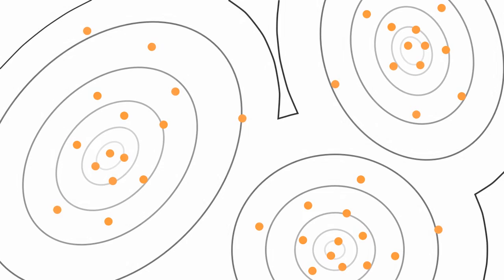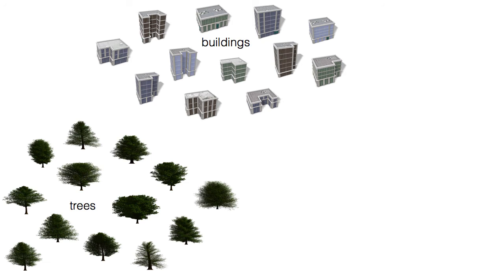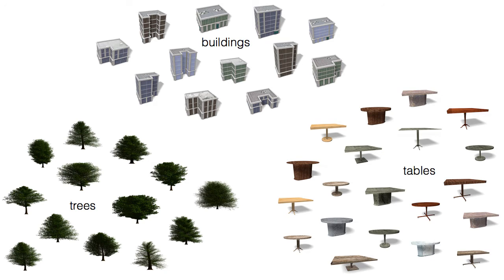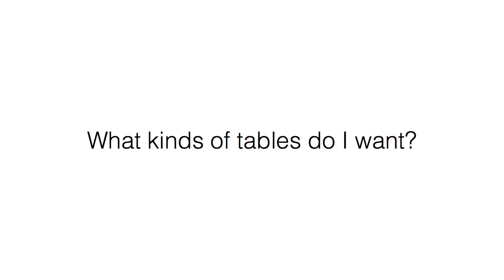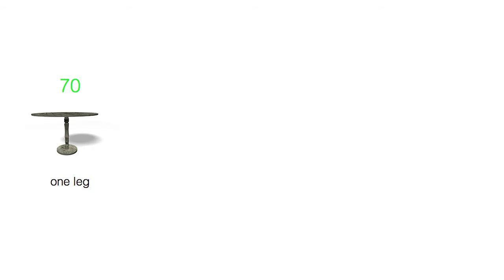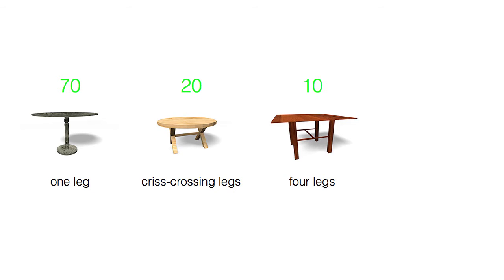These preferences could be for a selection of office buildings, an assortment of natural-looking trees, or a distribution of balanced tables. Consider the goal of creating a shape-space consisting mostly of one-legged tables, some tables with criss-crossing legs, and a few tables with four legs.